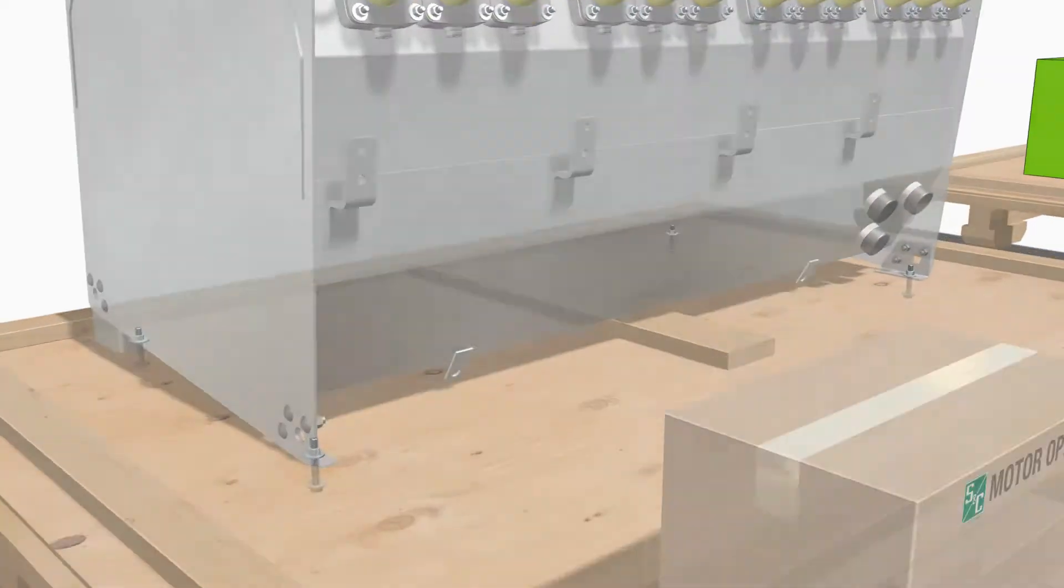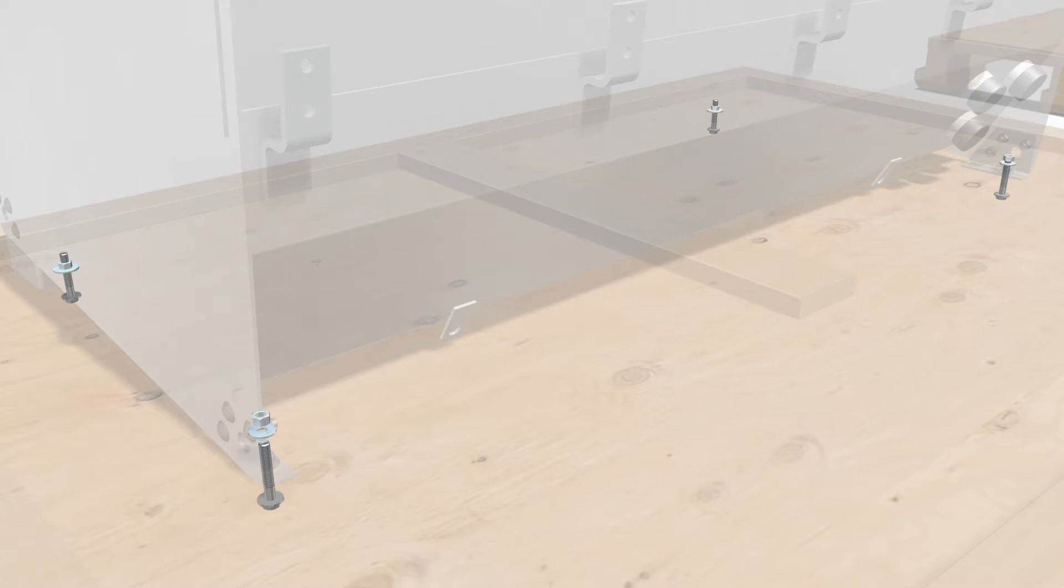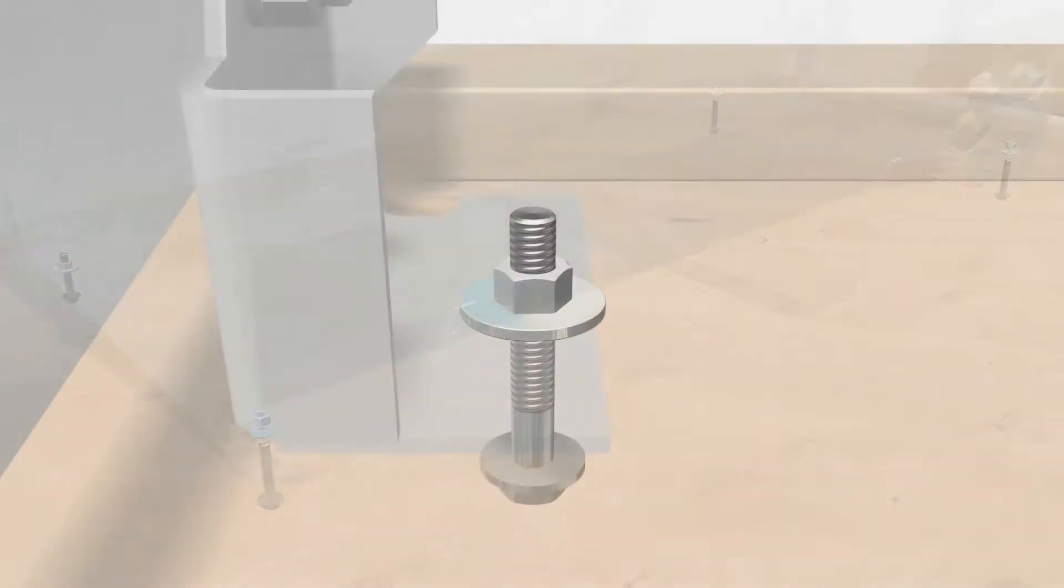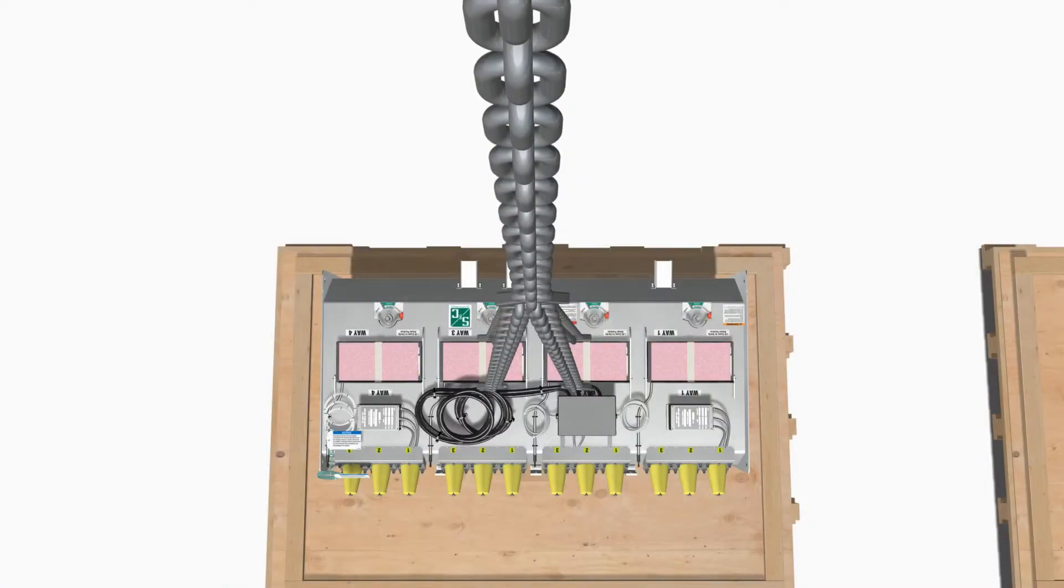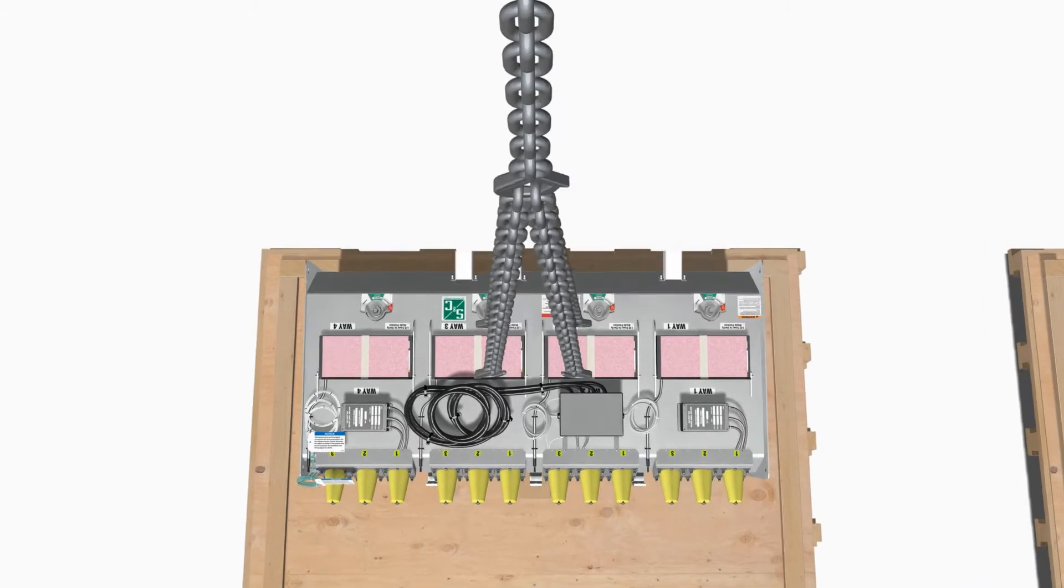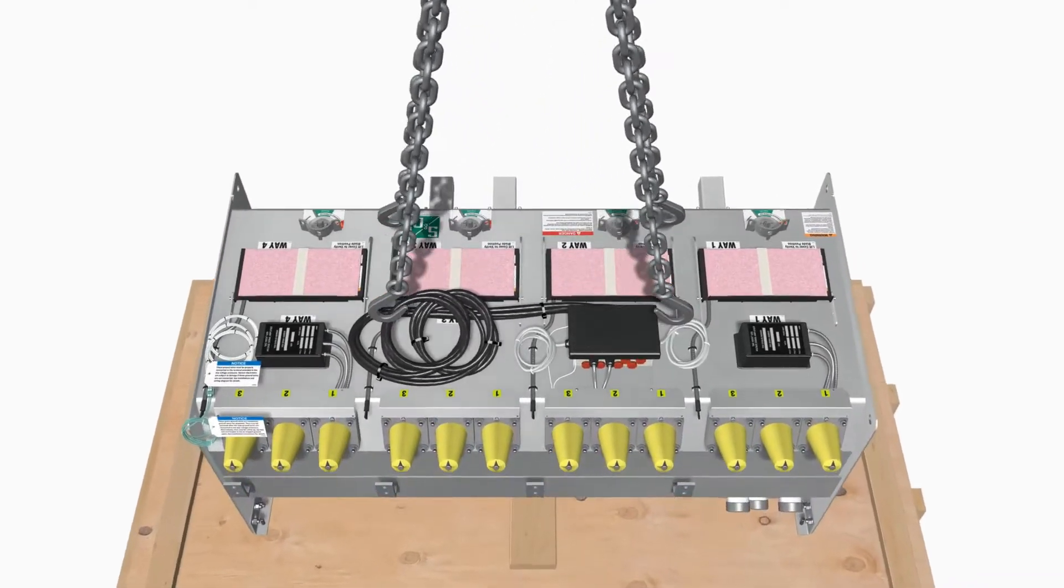To place the tank, first unbolt it from the skid. Then use a four-point lifting scheme to properly balance the gear.